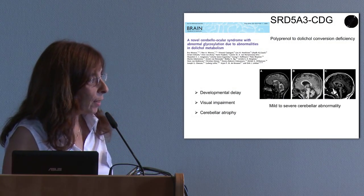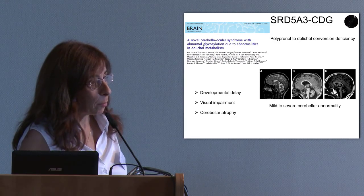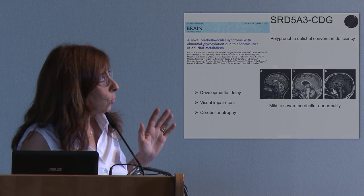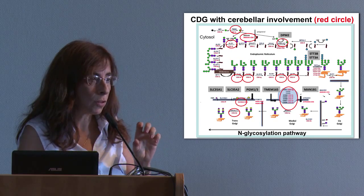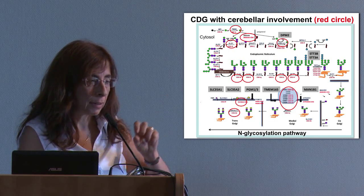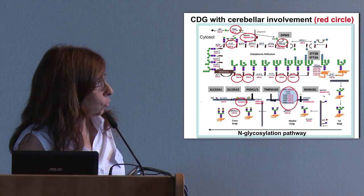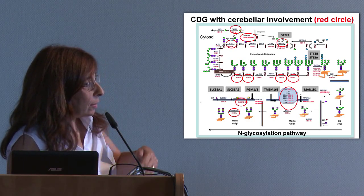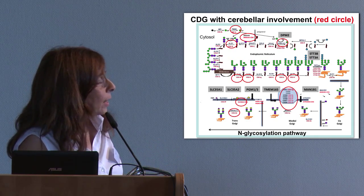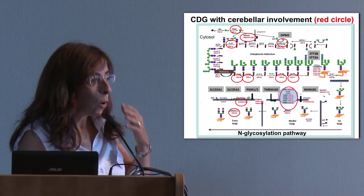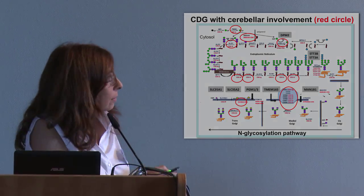In addition to PMM2-CDG, SRD5A3-CDG is another form with almost constant cerebellar involvement. This CDG is due to a defect in the synthesis of dolichol, a very important molecule that acts as a shuttle transferring sugar to nascent glycoproteins in several steps of the N-glycosylation pathway. Eva Morava reported a large series of these patients, who had developmental delay, visual impairment often due to ocular malformations, and variable degrees of cerebellar atrophy, as you can see here.